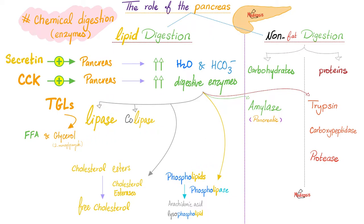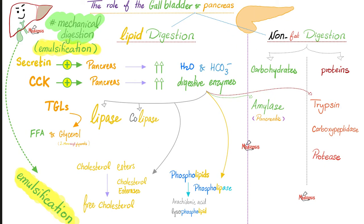Lipase and colipase will break down the lipids; cholesterol esterase will break down cholesterol; phospholipase will break down the phospholipids in your diet. The exocrine pancreas is for chemical digestion, but bile is for mechanical digestion — meaning emulsification — increasing the surface area of fat so that pancreatic enzymes can act upon it.